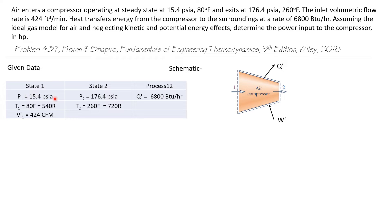Let's look at the given data. At state 1, we know the inlet pressure, the inlet temperature, which are pretty much room conditions, and the volumetric flow rate at the inlet, which is 424 CFM.